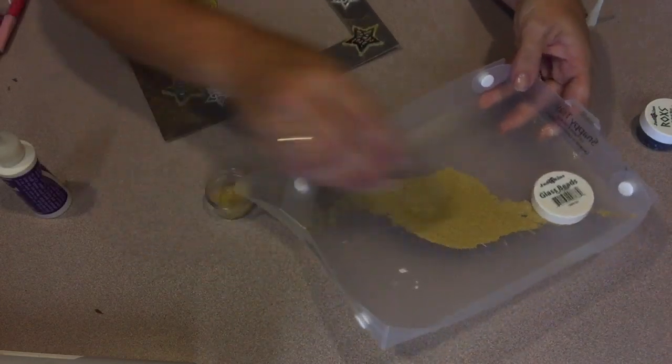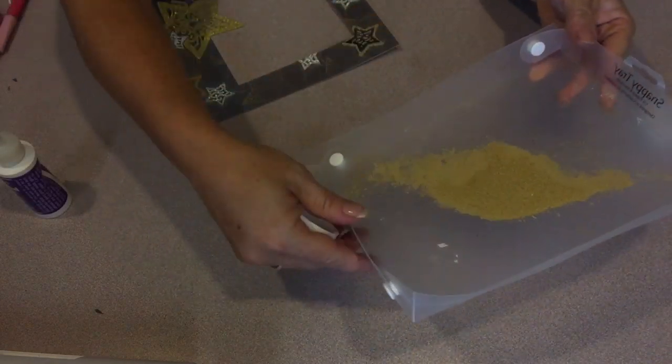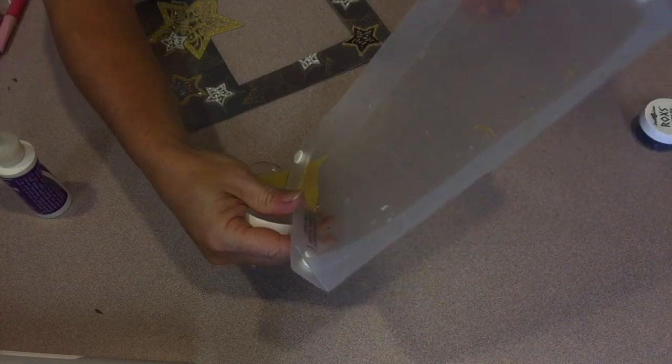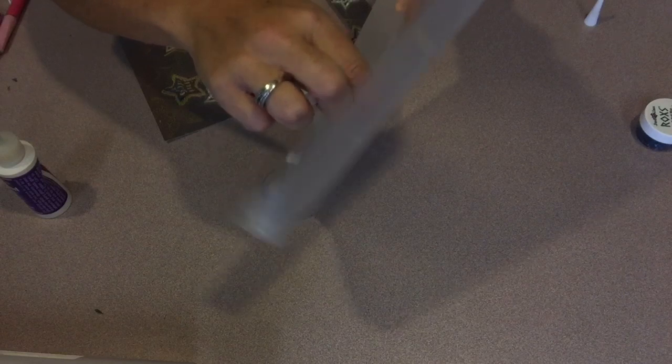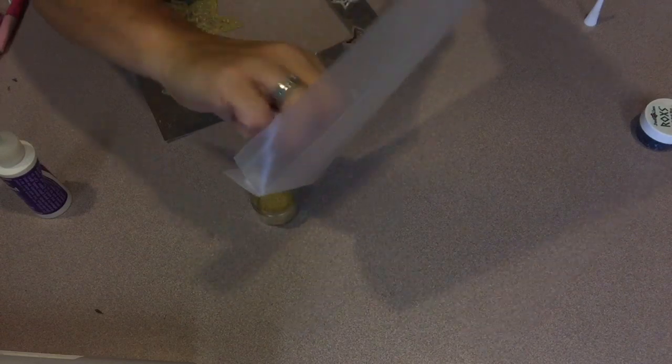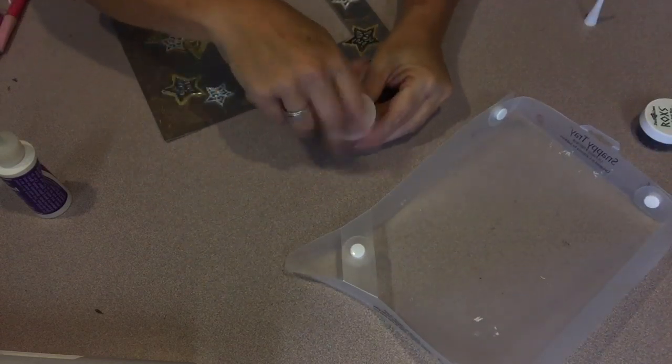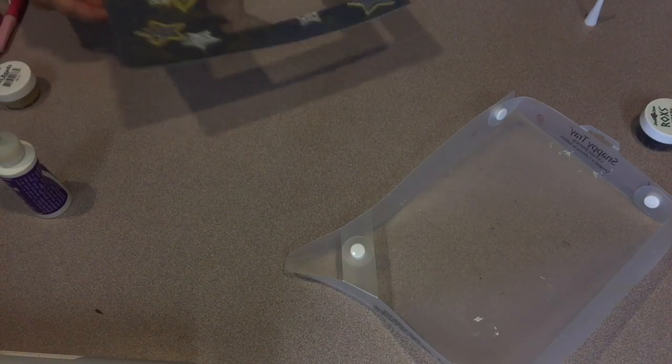And now you see why the Snappy Tray is so handy, because that little funnel on the end allows you to return your glass beads or your glitter or any small things that you're working with right to the jar that they came from with almost no mess.